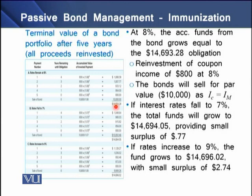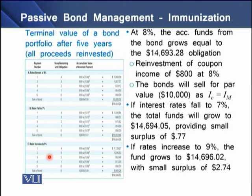In the second scenario, where the interest rate falls to 7%, the fund grows to $14,694.05, providing a small surplus of $0.77. In the third scenario, where the interest rate increases to 9%, the fund grows to $14,696.02, again giving a small surplus of $2.74.